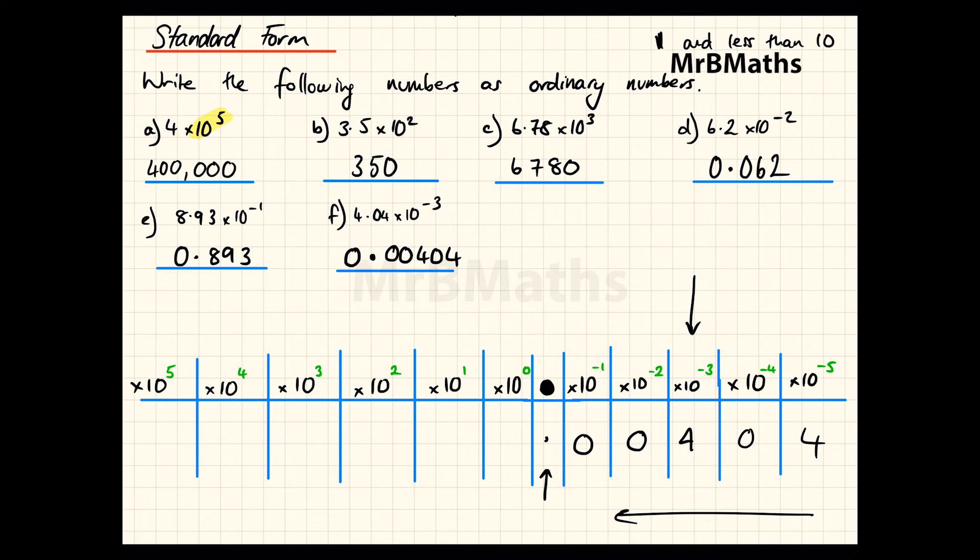Now you should be able to see a reason why standard form might want to be used. I'm sure you will agree that seeing this 4.04 times 10 to the minus three is a lot easier to understand than seeing this number. There's two reasons for that: one, it's slightly easier to see, and two, you're far less likely to make mistakes with the standard form number than you are with the ordinary number. You could quite easily, for example, write 0.0404, and by missing that zero here you've drastically changed the number.